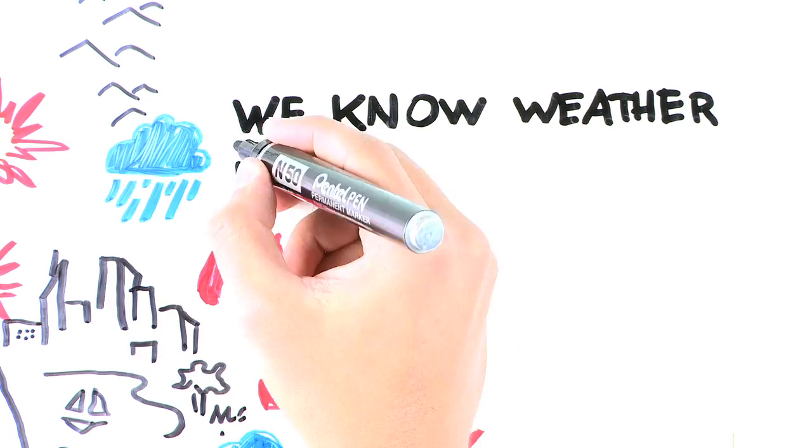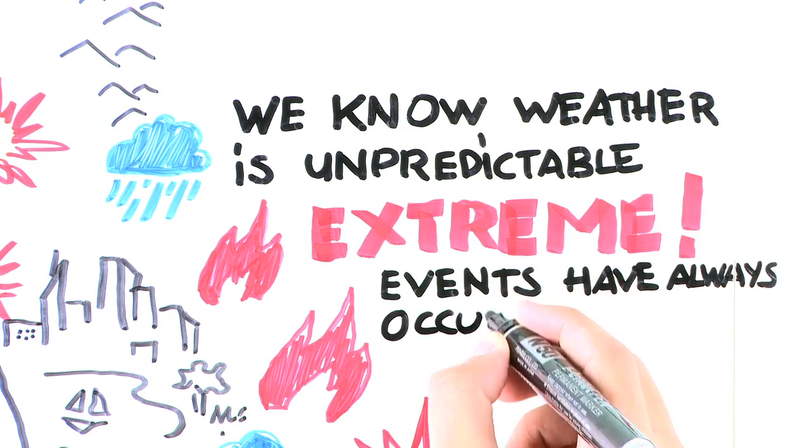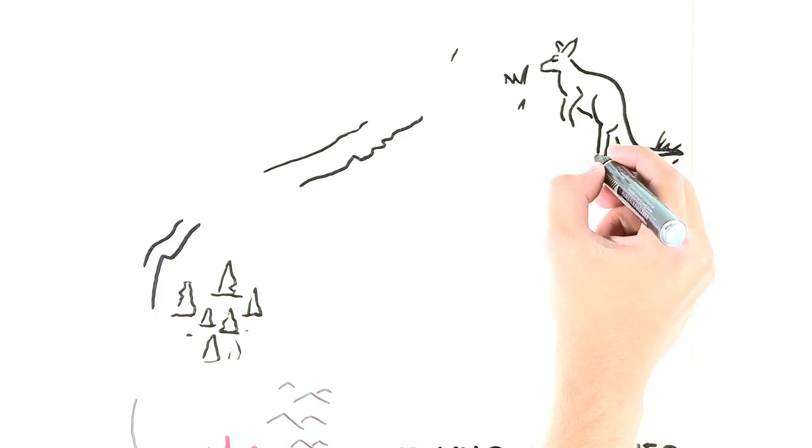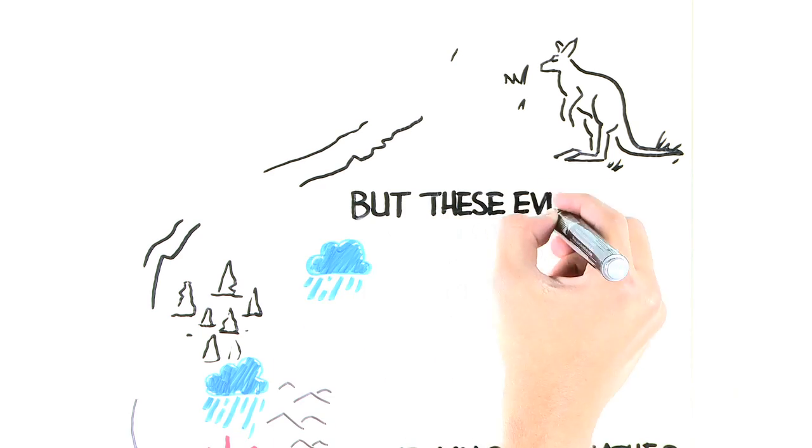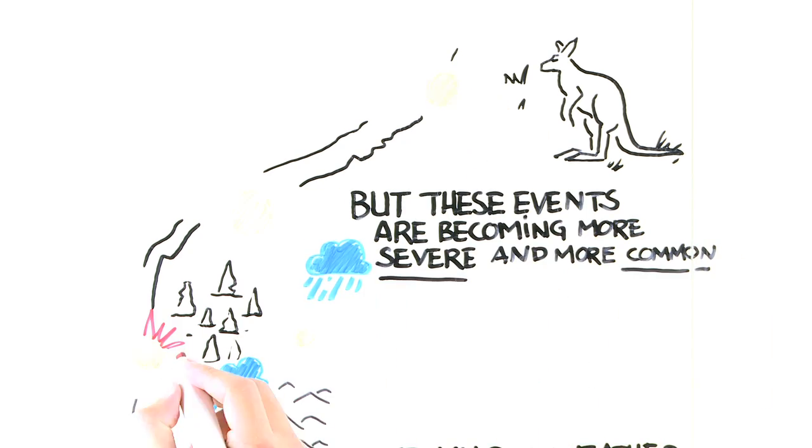We know weather is unpredictable and extreme events have always occurred. We also know these events are becoming more severe and more common. And yes, these shifts are down to climate change.